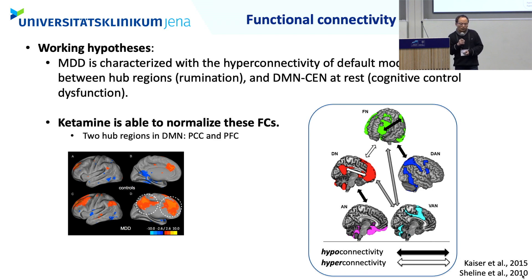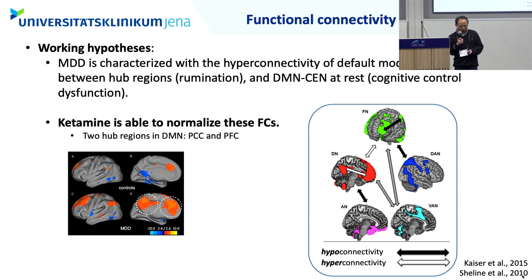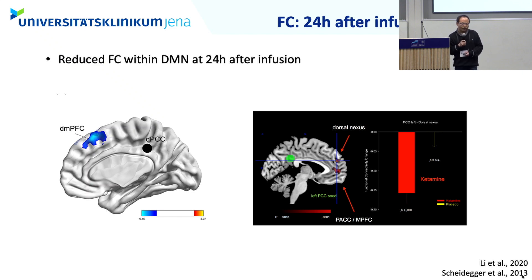First, let's look at the functional connectivity change with ketamine. Based on prior work reviewed by CASA in 2015, depression is characterized by hyperconnectivity within the default mode network and between the default mode network and the central executive network. We hypothesized that ketamine would normalize this hyperconnectivity. We focused on the two key hub regions of the default mode network — the PCC and the prefrontal cortex. We observed reduced functional connectivity within the DMN from dorsal PCC to DMPFC 24 hours after infusion, consistent with a previous study by Scherdinger in 2012.